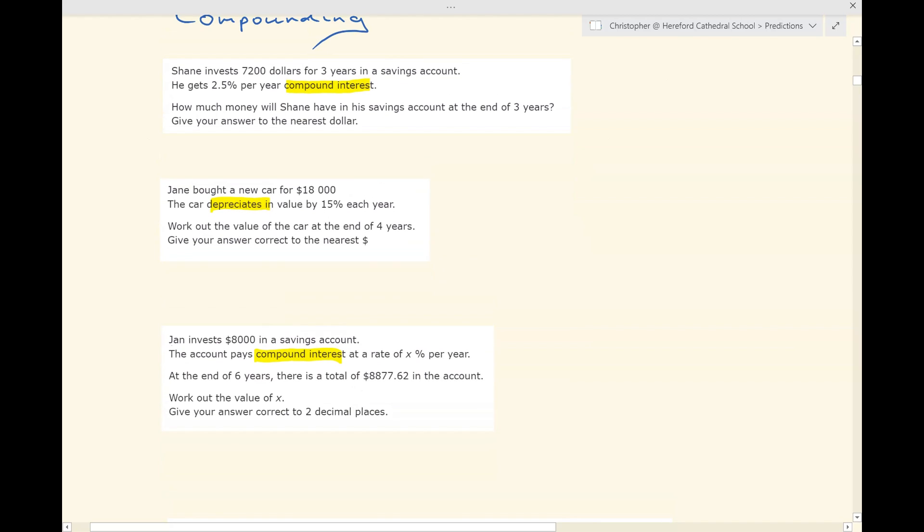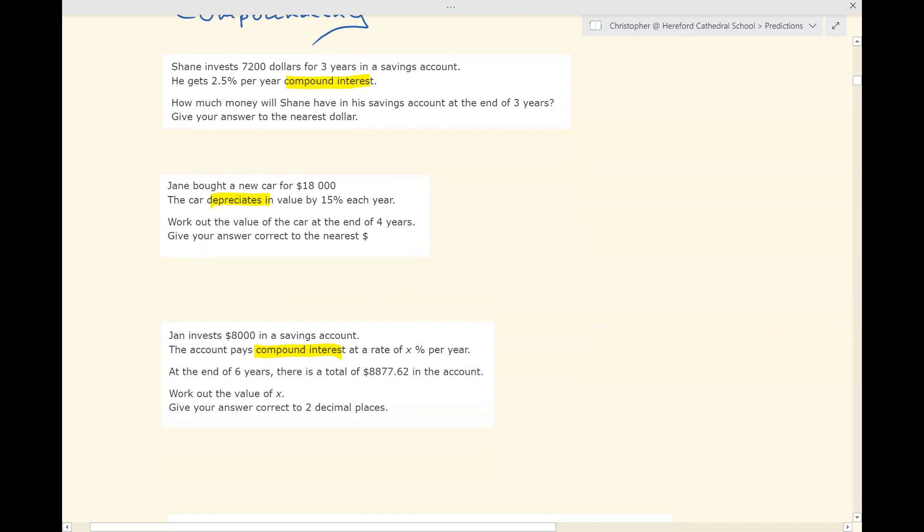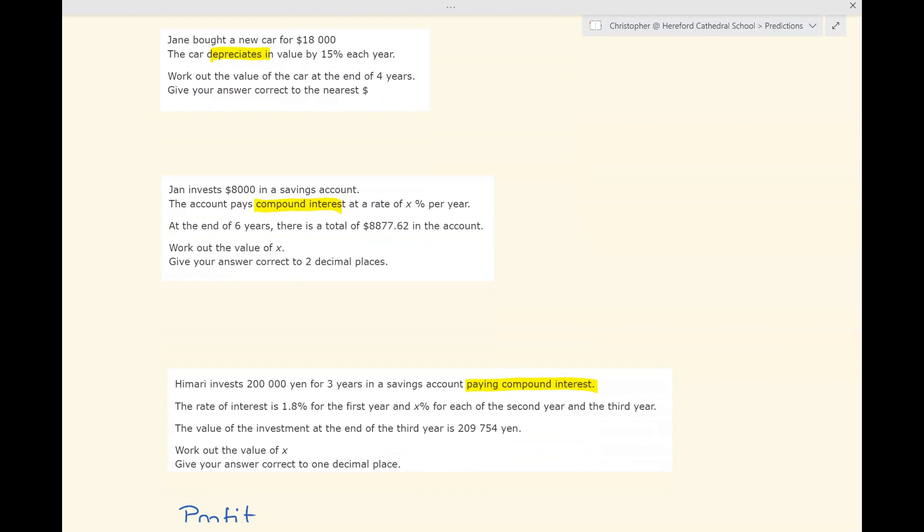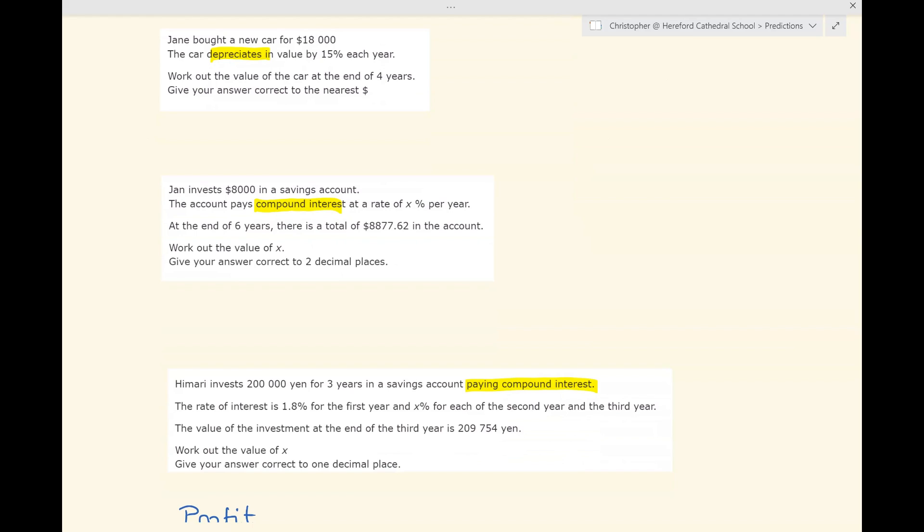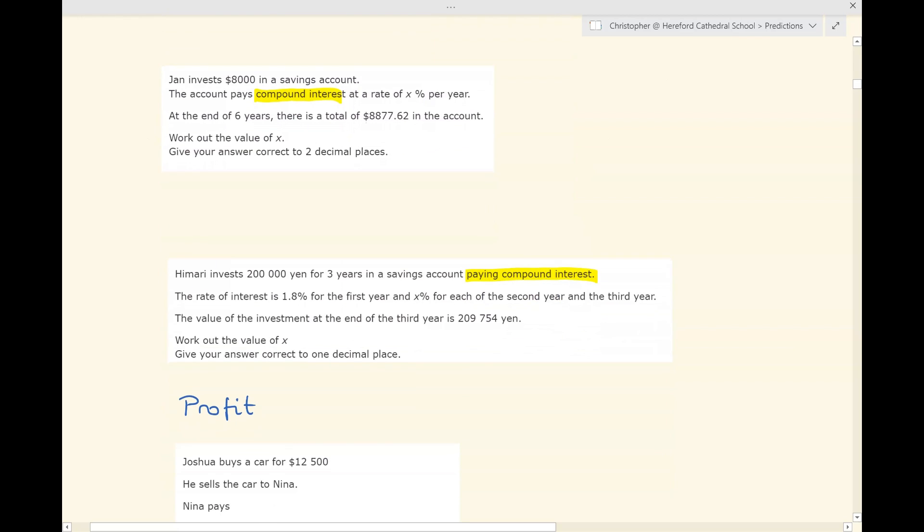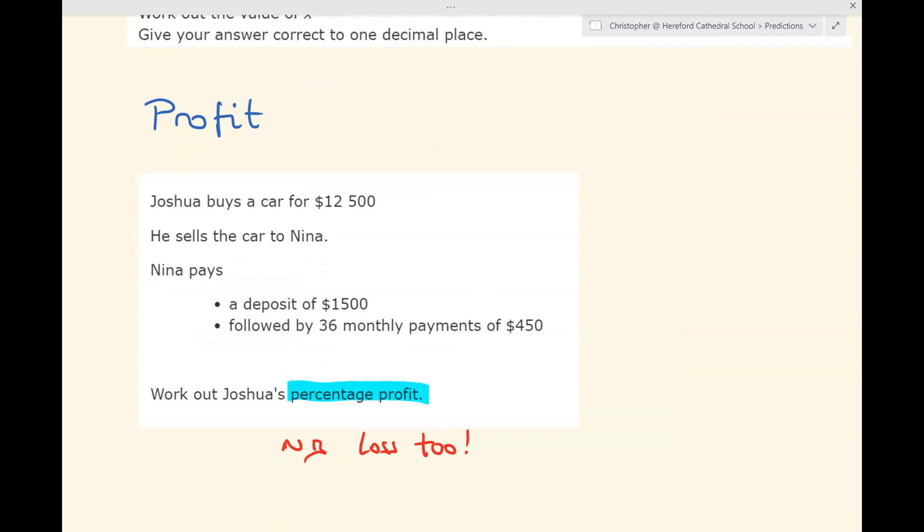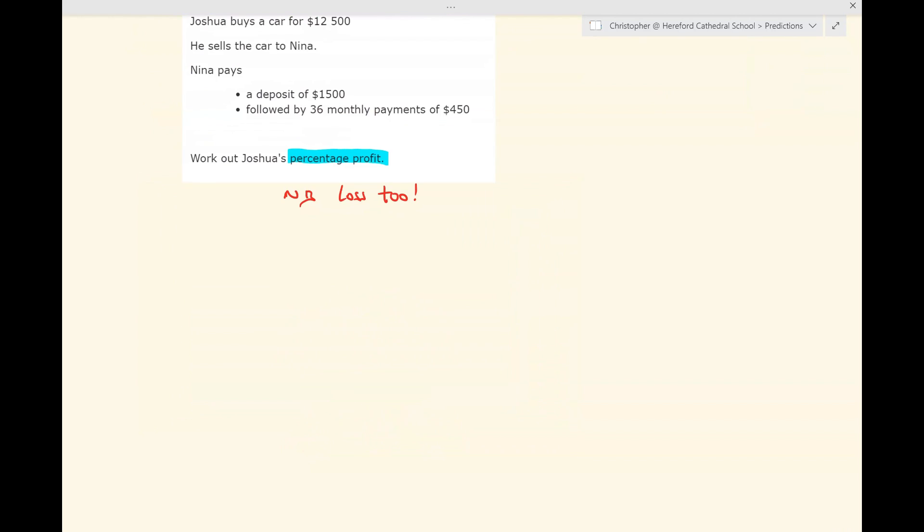Quite simple questions when you find the amount after several repeated changes. And then, of course, there are questions where you have to find what the interest rate was that's been compounded year after year. Questions can be quite simple or much more difficult. Percentage profit is another area of percentages which generally comes up once across the two papers. It hasn't come up yet. You'll need to get your head around percentage loss as well.